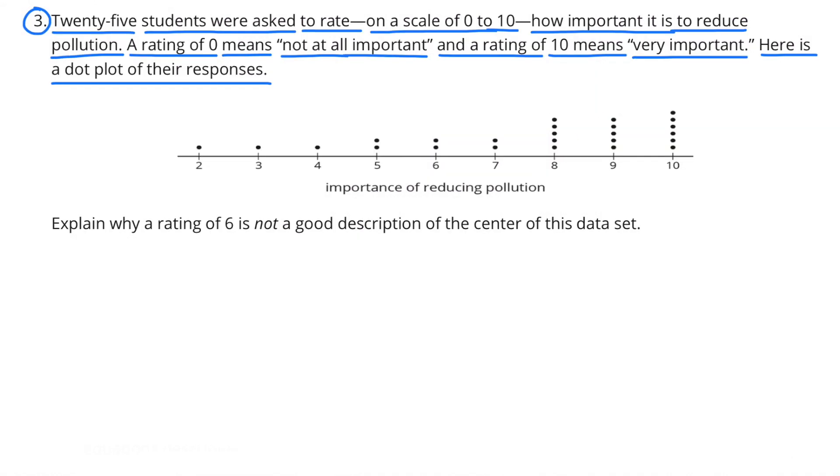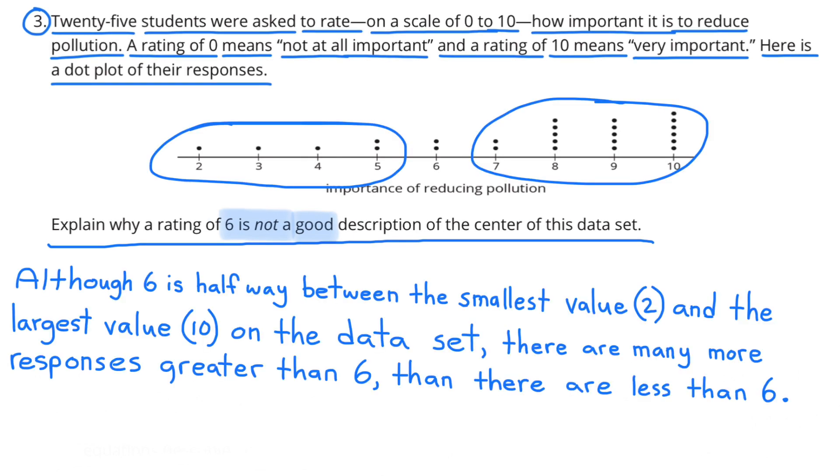Number 3: 25 students were asked to rate on a scale of 0 to 10 how important it is to reduce pollution. A rating of 0 means not at all important, and a rating of 10 means very important. Here is a dot plot of their responses. Explain why a rating of 6 is not a good description of the center of this data set. Although 6 is halfway between the smallest value, 2, and the largest value, 10, on the data set, there are many more responses greater than 6 than there are less than 6.